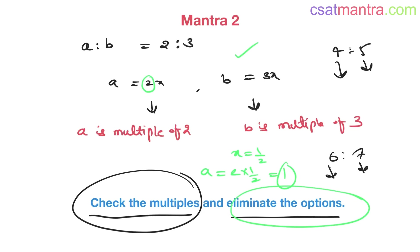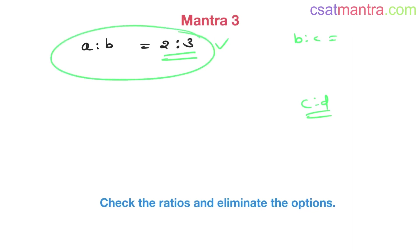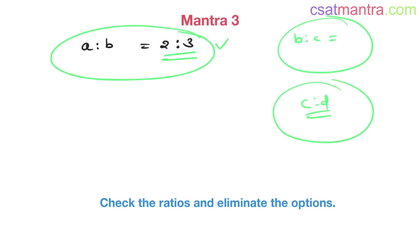Third mantra: after comparing and eliminating via multiples, find the ratio of the first term to the second term in each remaining option and see if it gives you 2 is to 3. If it does, that should be your answer. Similarly, b is to c should also give the same ratio as given in the problem, and c is to d should give the same ratio too. With practice, quickly comparing, checking multiples, and checking ratios, you will arrive at the answer.